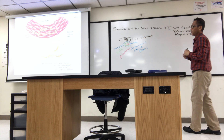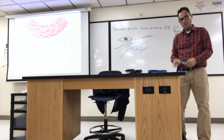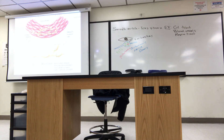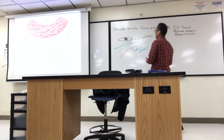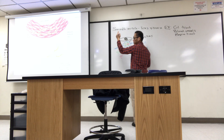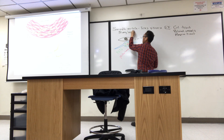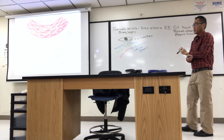Instead of an axon terminal, you have the varicosities. You can see on the figure how they interact with the layers of smooth muscle. Smooth muscle doesn't exist as solitary cells — as a tissue, it has many layers.